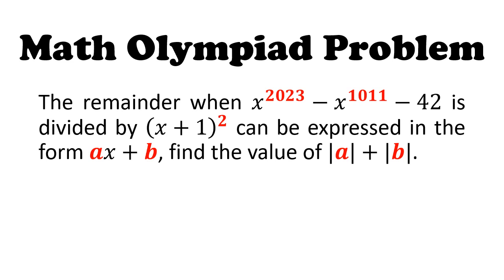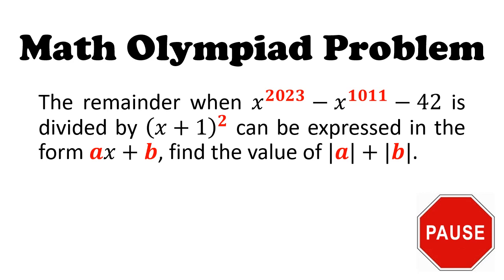Greetings! In today's video, I present to you a challenging Olympiad problem. We want the remainder when the polynomial x to the power of 2023 minus x to the power of 1011 minus 42 is divided by the divisor x plus 1 squared. This remainder can be expressed in the form of ax plus b, and we want the value of modulus of a plus modulus of b. Pause the video here and give this question a good try.